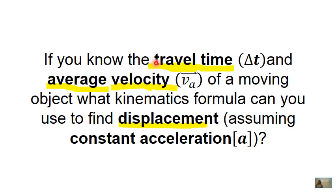If you know the travel time and average velocity of a moving object, what kinematics formula can you use to find displacement? And here I'm assuming constant acceleration displacement. So the object is moving with constant acceleration. I'll give you a moment to think.